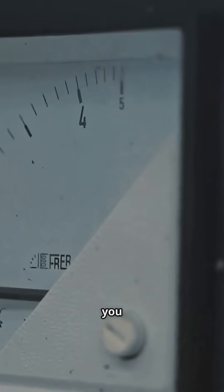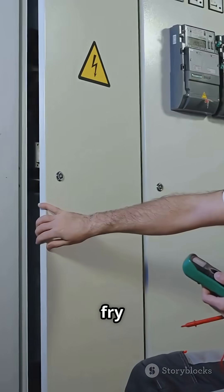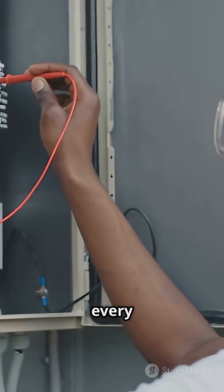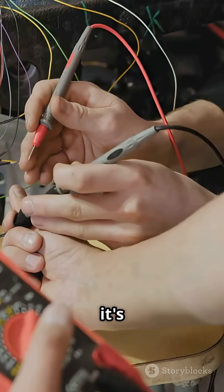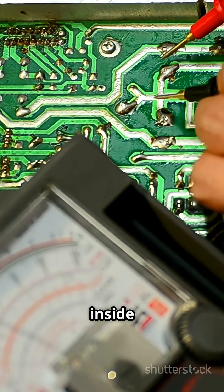And checking current lets you see exactly how much juice is flowing, so you don't fry your components. That's why every tech hobbyist swears by their multimeter—it's the key to unlocking the secrets inside any device.